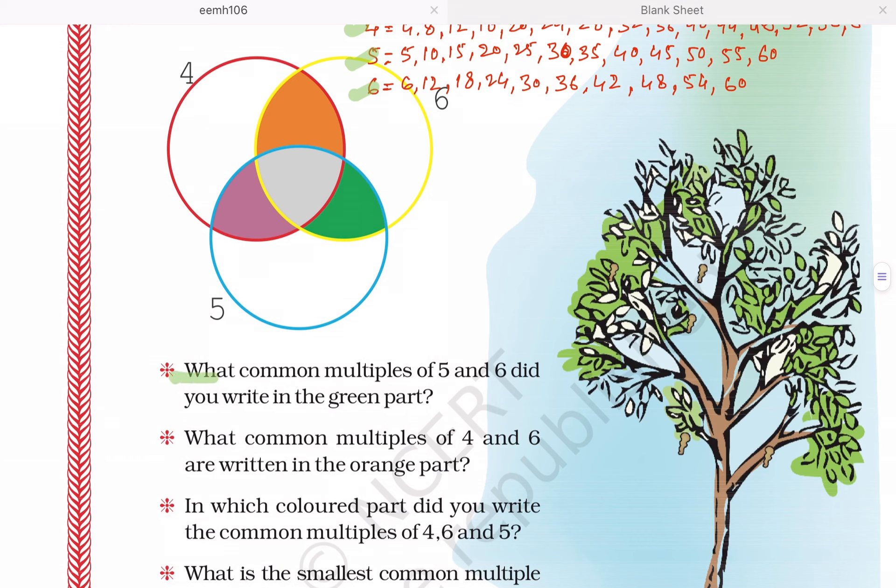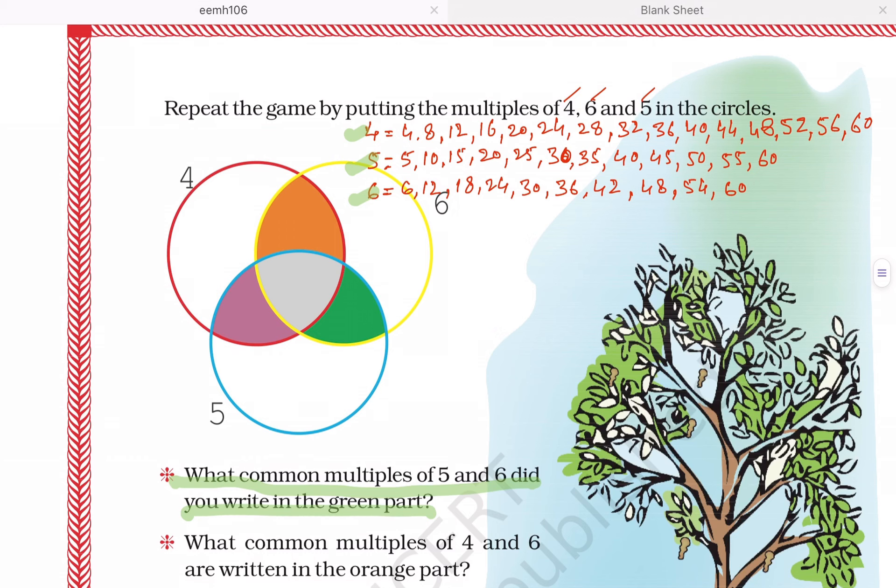Now come to the first question. What common multiples of 5 and 6 did you write in the green part? You have to find the common multiples of 5 and 6. Look here. The common multiples of 5 and 6 are 30 and 60. You have to write in the green part 30 and 60.